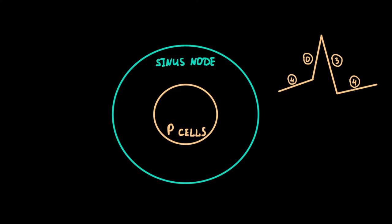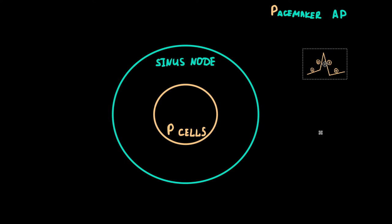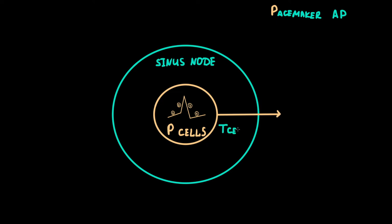These cells have a typical pacemaker action potential. The amplitude of sinus node depolarization is very small, therefore it can't be detected by routine ECG examination. The second type of cell is transitional cells, or T-cells, which propagate the impulse from the central pacemaker cells to atrial tissue. T-cells are the main element of conduction between P-cells and atrial tissue. A problem with T-cells defines a problem of conduction from the sinus node to atria, which we call sinoatrial exit block.